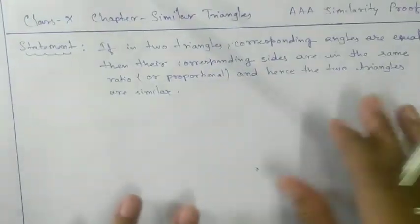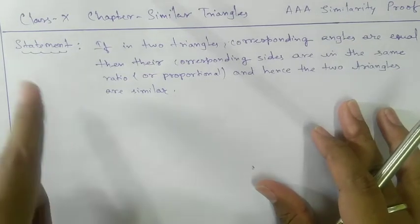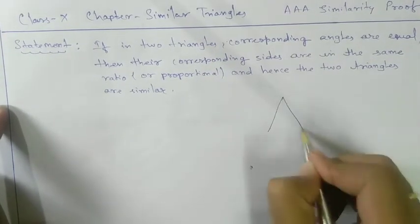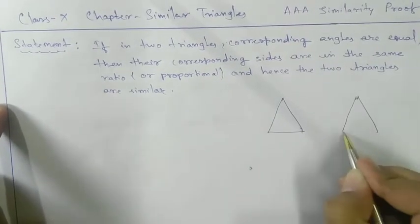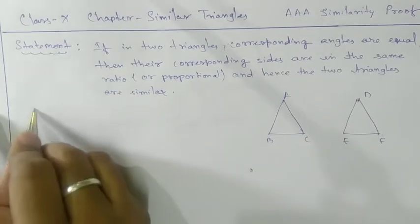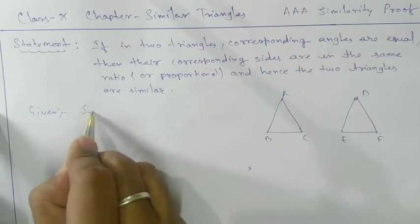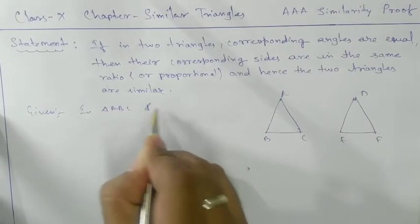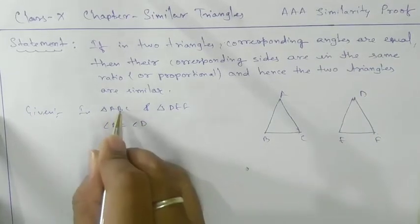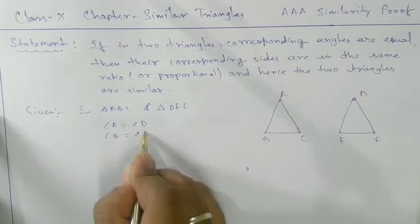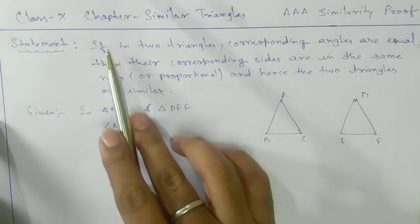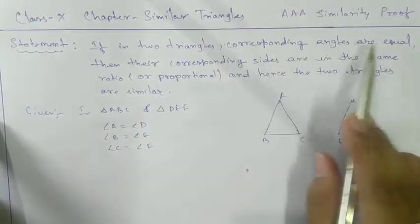So let's look at what is given here. We will go for the statement. They are saying that in two triangles — let's draw a rough diagram — triangle ABC and triangle DEF. It is given that angle A equals angle D, angle B equals angle E, and angle C equals angle F. That is, their corresponding angles are equal.